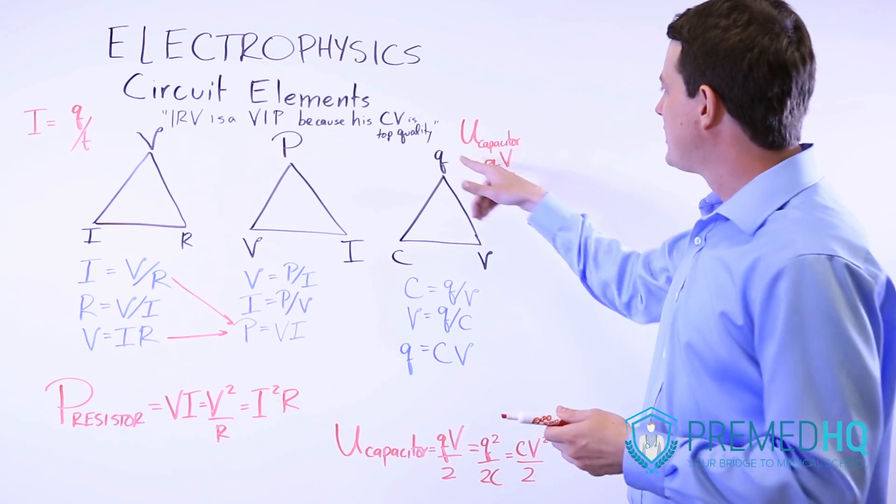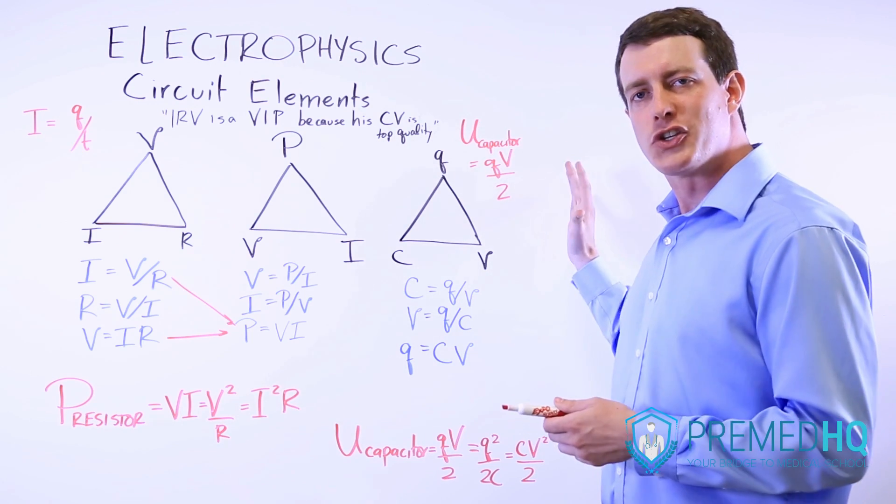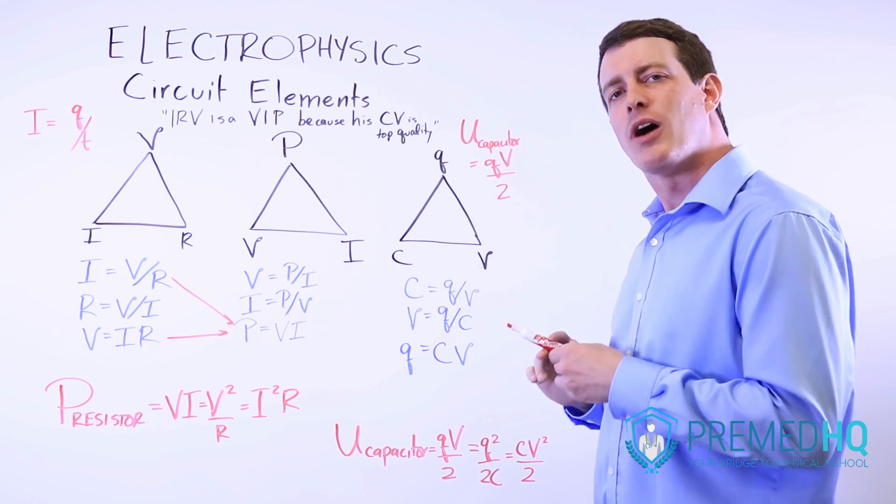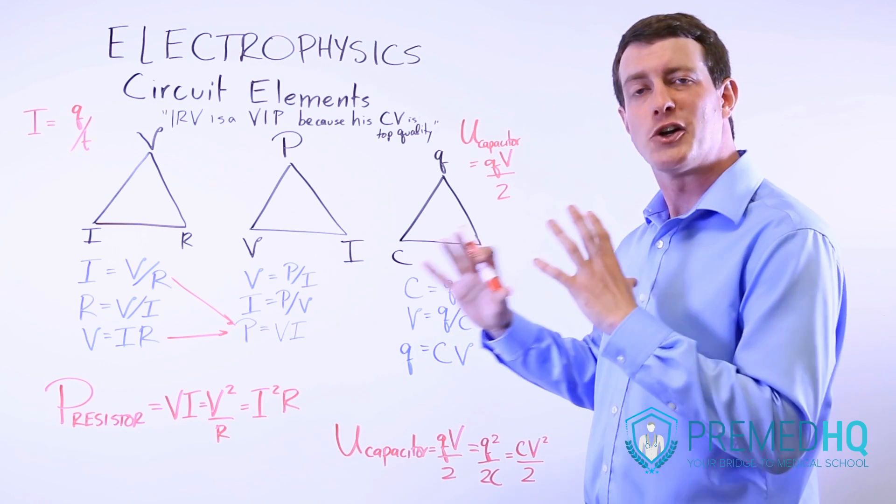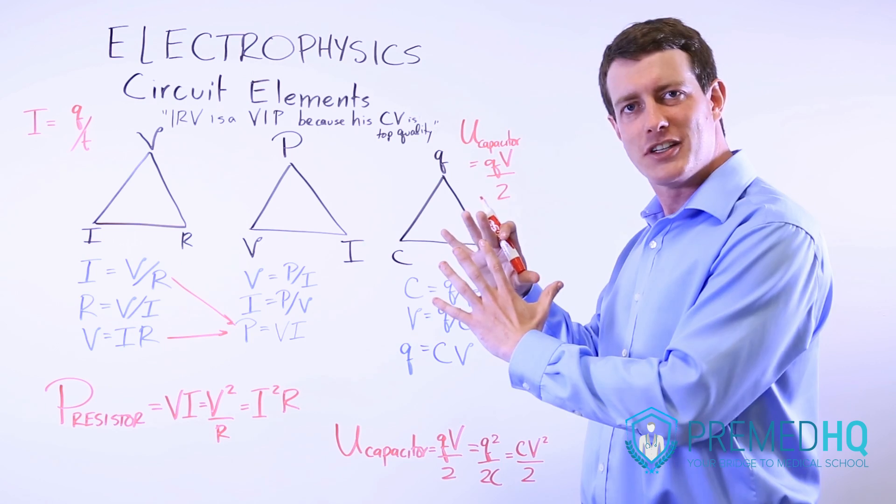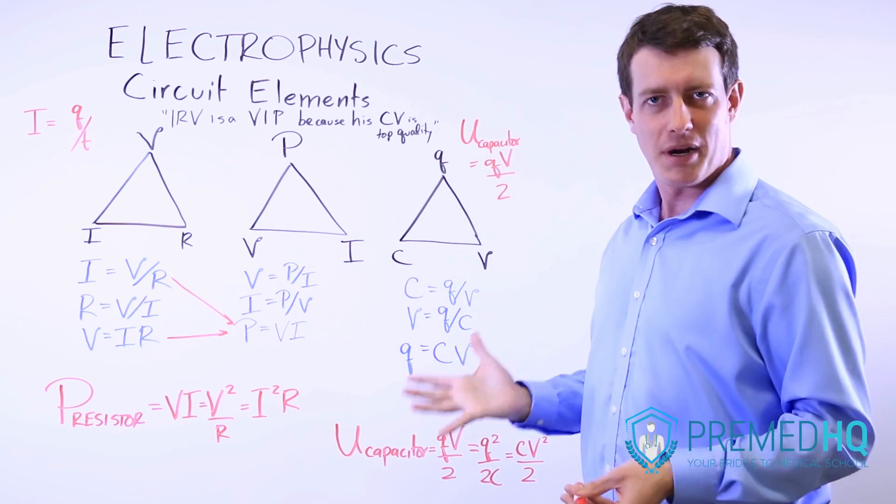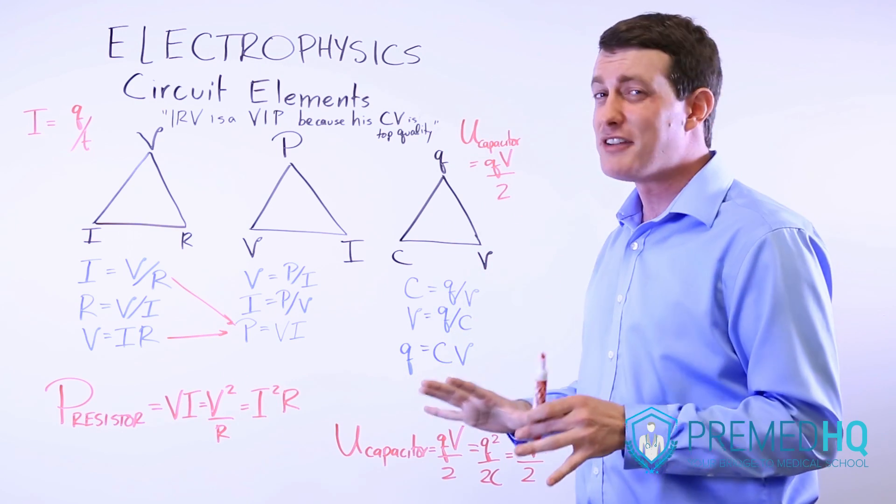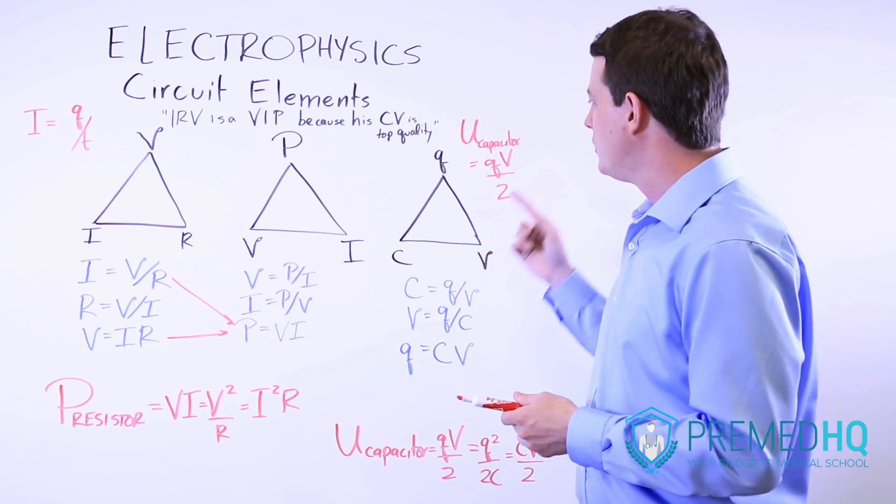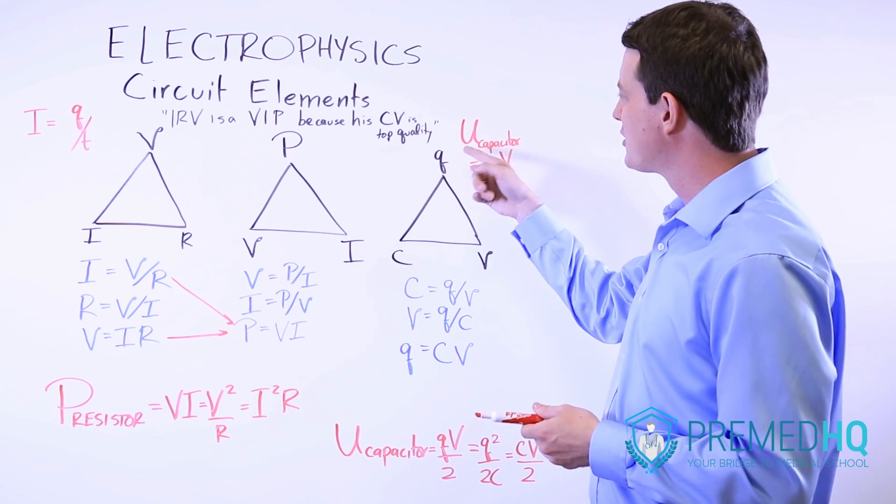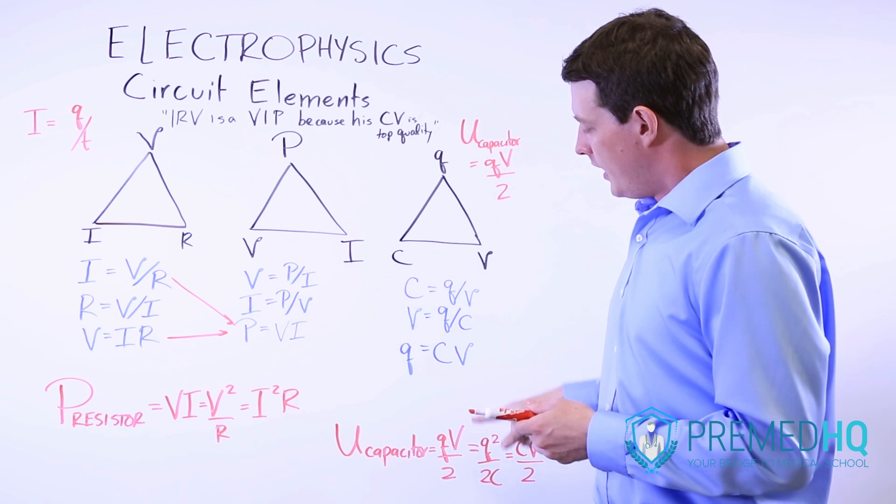Now for the potential energy of a capacitor, it's equal to QV over two. And this one's probably worth just memorizing. You can also look at it as the potential energy formula in a constant field, which is going to be QV divided by two. And the derivation of that is not something you'll be responsible for on the MCAT, but you will be responsible to know that the potential energy stored by a capacitor equals QV over two.